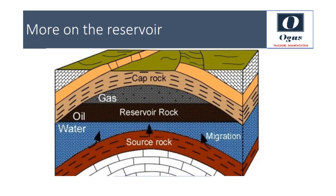In many reservoirs, initially there is no gas cap — all the gas remains as a solution with the oil. But as we drill into the reservoir and the reservoir starts producing, that is, we start taking out the oil, the pressure slowly reduces and the gas in solution is released to form a gas cap. So to form a reservoir we need a source rock, a layer of reservoir rock, a cap rock, and migration from the source to the reservoir rock.